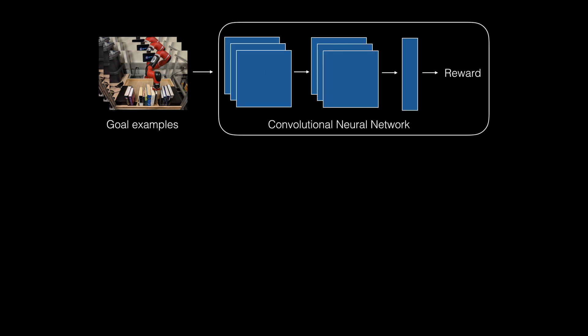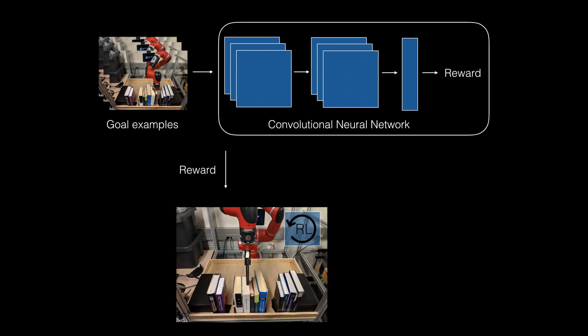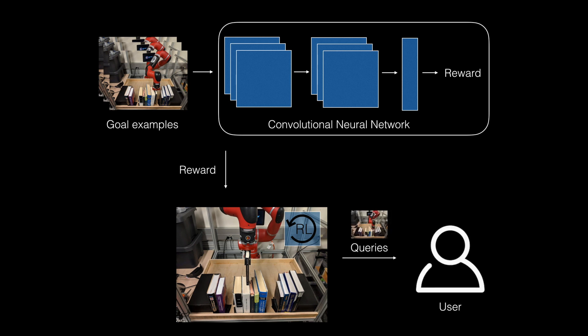Here is an overview of our approach. A user provides a few example images of successful outcomes, without demonstrations or any additional guidance about how the task should be done. We learn a reward function on images using a success classifier. We then run RL with this reward while simultaneously performing occasional active queries, and use all labels so far to update the classifier.